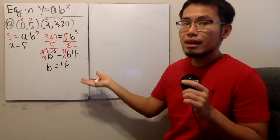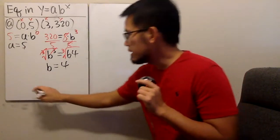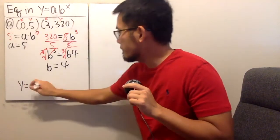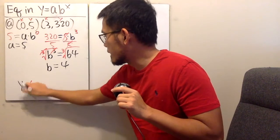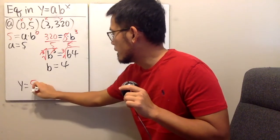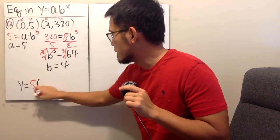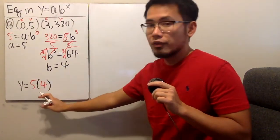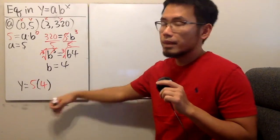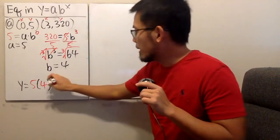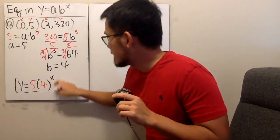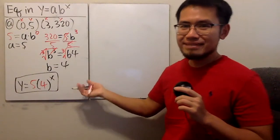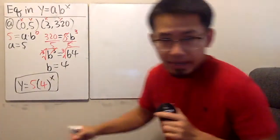And you are done. So in the end, the answer is y equals 5 times 4 to the x power. And with that, we are done.